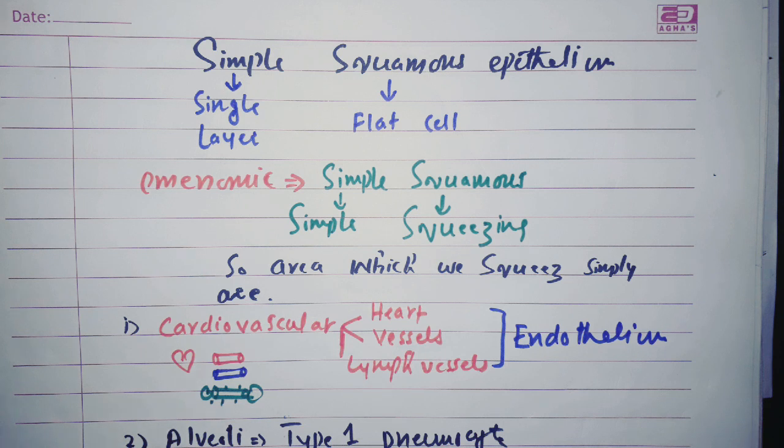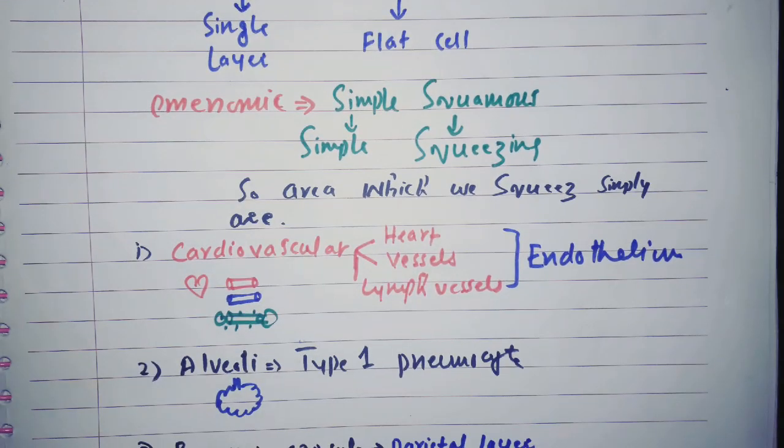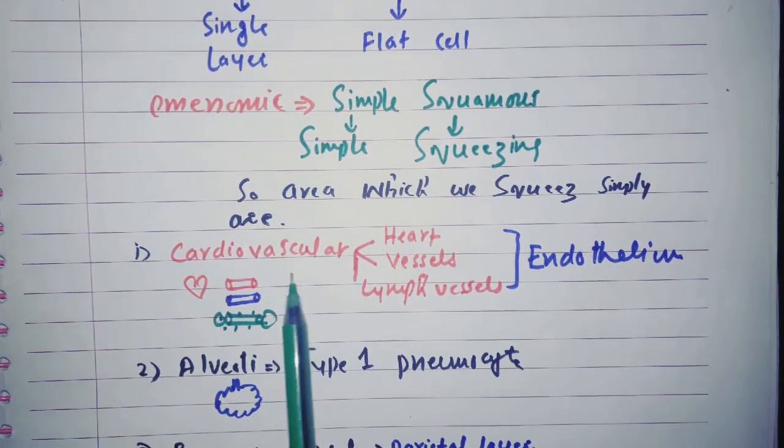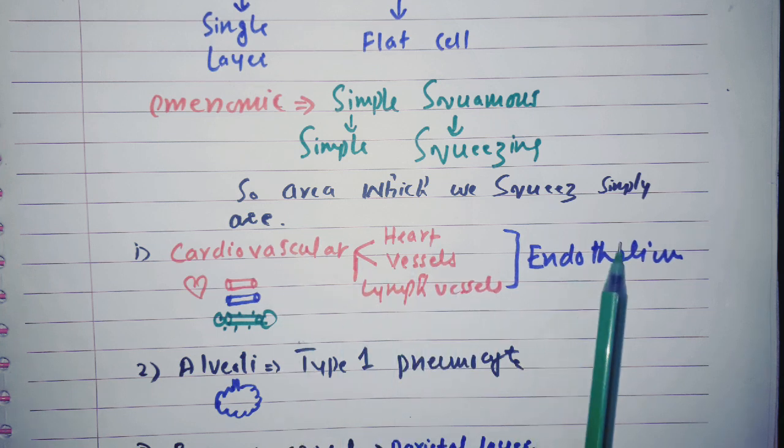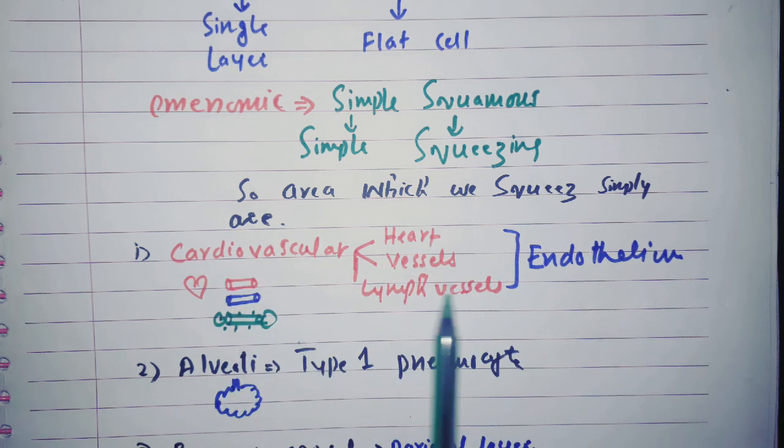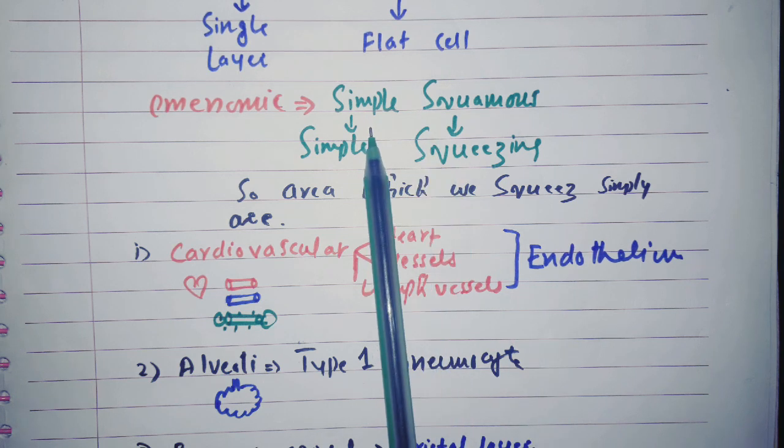So those areas in the body which we can squeeze there will be simple squamous epithelium. Like first of all we are having cardiovascular system, heart and blood vessels and also the lymph vessels. The inside they are lined by endothelium and we can squeeze it, so that's why this endothelium we say it is the simple squamous epithelium.